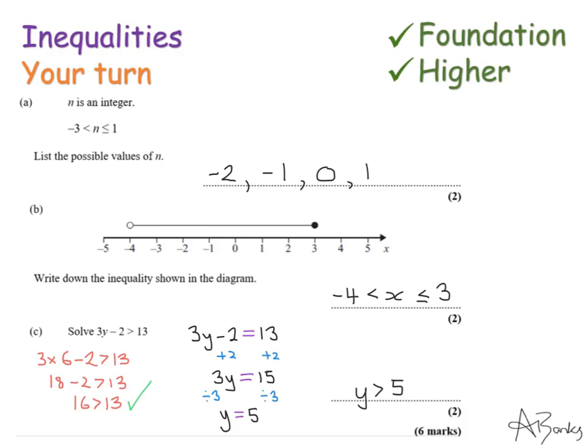The second question was everything between minus 4 and 3, including 3 but not minus 4, so you needed to make sure you put a line underneath that inequality symbol. In the last question I replaced the greater than sign with an equal sign, solved the equation, got y equals 5, which means y is greater than 5. I tested that using y equals 6 and confirmed it worked. Thank you for watching.